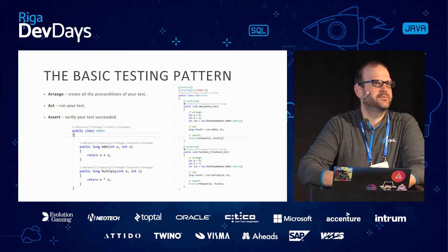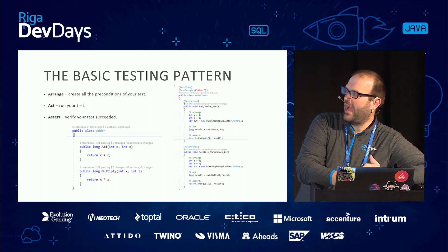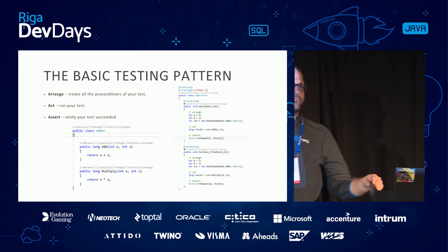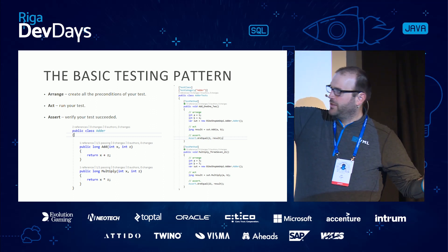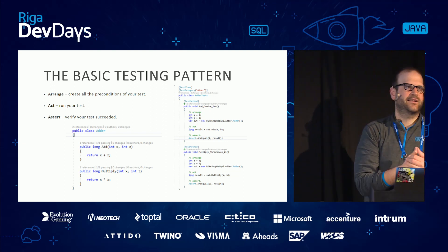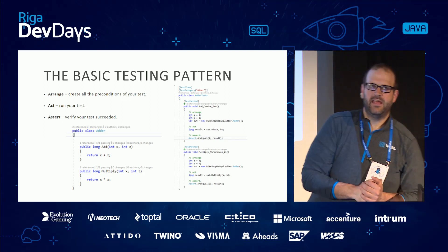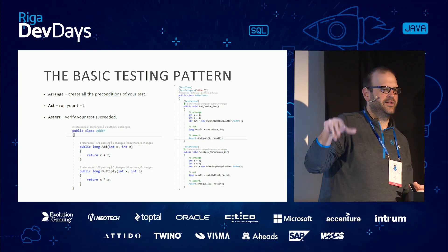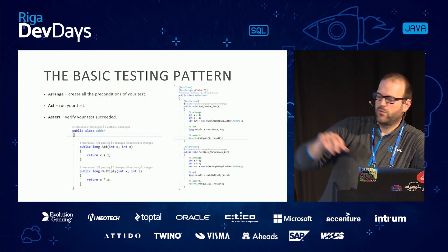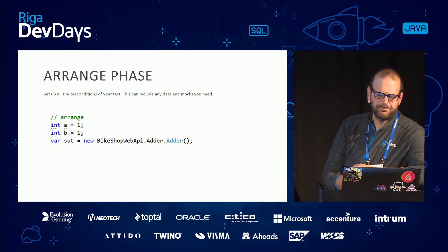The basic testing pattern you're going to see — I stole this from Scott Guthrie or Scott Hanselman — is Arrange, Act, Assert. This is how you structure your tests. In all my code, in every language, you're going to see the same pattern: I arrange stuff and make it explicit, I act on the system under test (SUT), and then I wait for a result. If you keep this structure, any arbitrary team member can look at your test and know exactly what's going on.